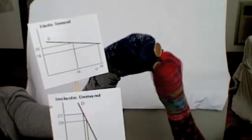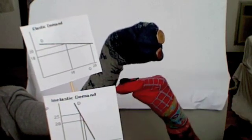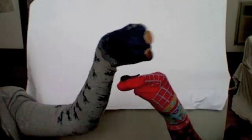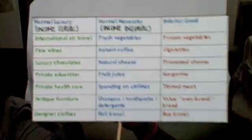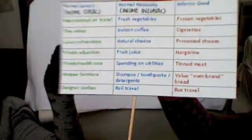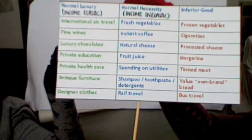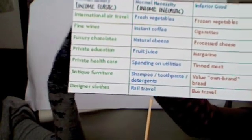The graph would look like this. Examples include these — these are income inelastic and these are income elastic.